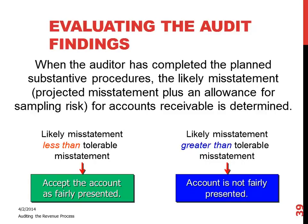Remember, you're taking a sample — you're not looking at items 100%. You're taking a sample of items, and from that sample you're going to project any errors you find to the entire population. For example, if you looked at 500 transactions out of 1,000 and found errors amounting to about 10% of the sample, you have to project that to the entire population.